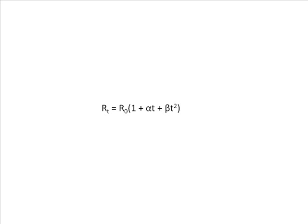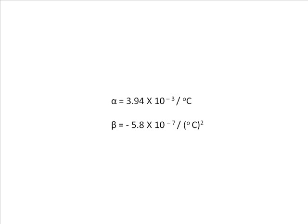As the higher order constants are quite smaller compared to alpha and beta. For platinum, the value of alpha is 3.94 into 10 to the power minus 3 per degree centigrade and the value of beta is minus 5.8 into 10 to the power minus 7 per degree centigrade square.